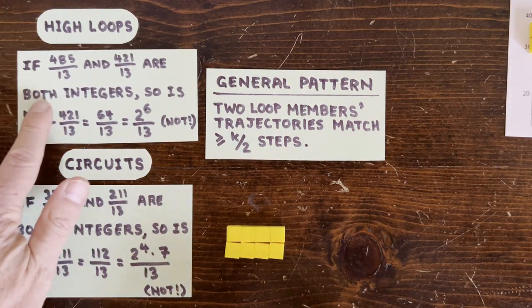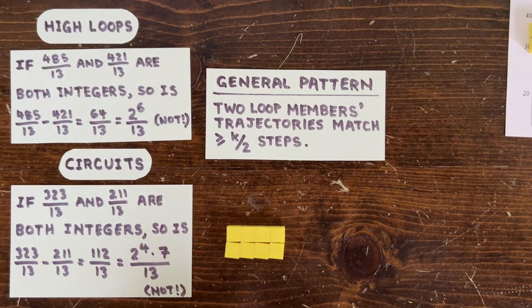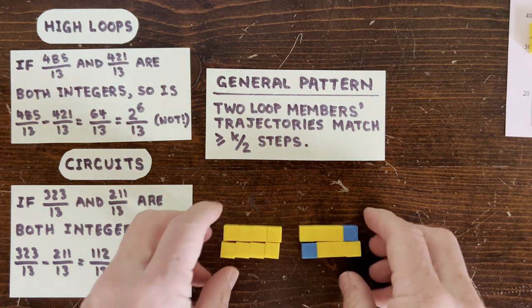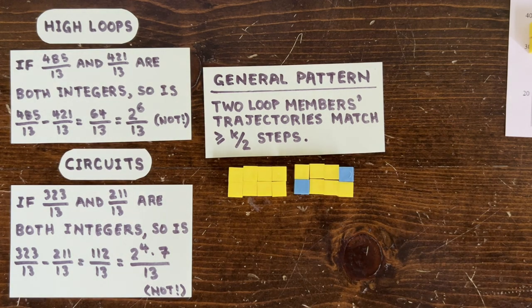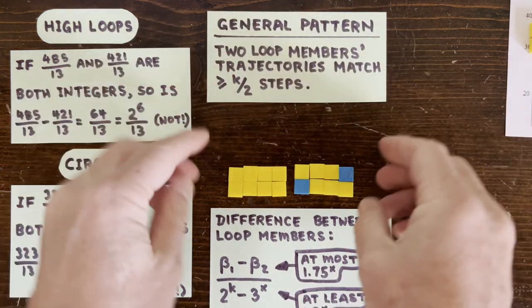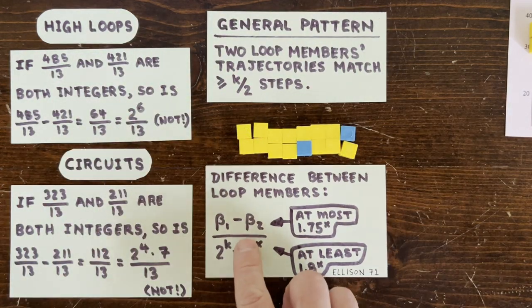So here are two members of loop that initially match. The worst case for their non-matching part, according to the analog computer, looks like this. And if we crunch out the value of the difference, we find that the numerator is always less than 1.75 to the k,